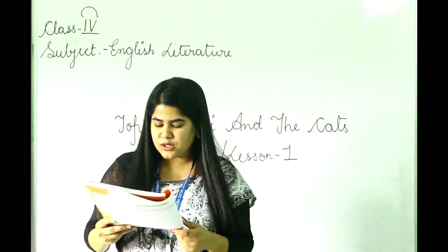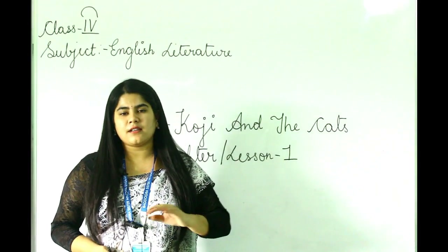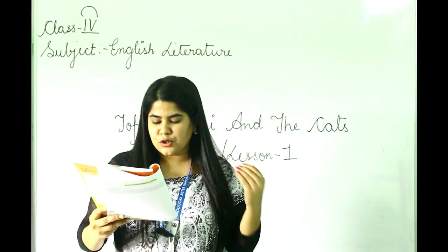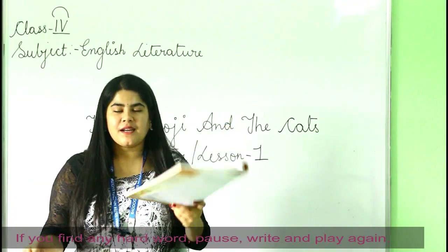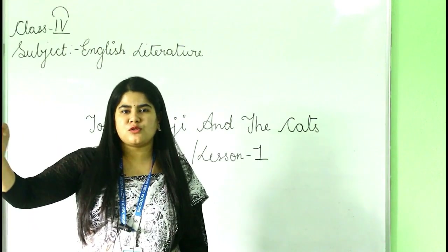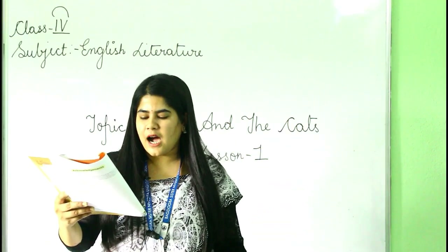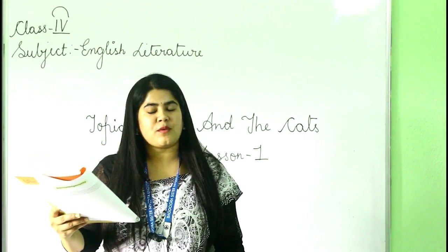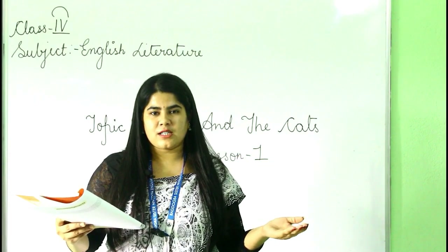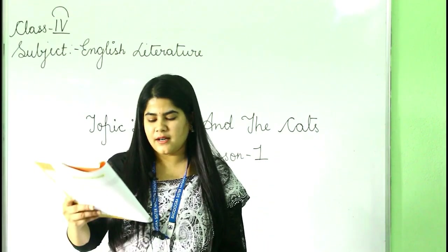While the other children learned their lessons, Koji only painted cats. He painted them on the shoji screens, on books, on paper scrolls, on the ground, and even on the bare yellow walls. Shoji means a sliding door or screen made of thin paper. The priest felt that after a few months Koji was wasting his time, as he always painted and never learned anything new.